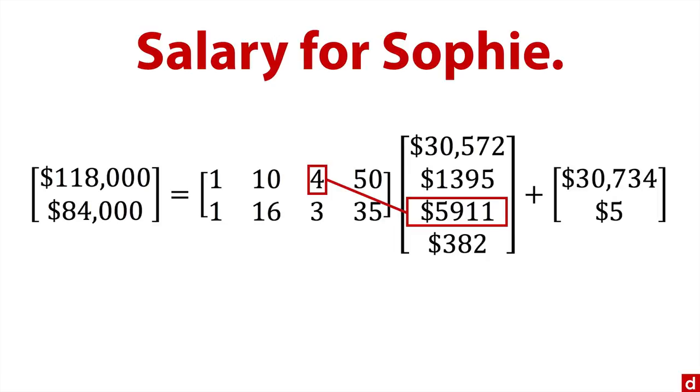By the way, these are real coefficients from a study, a survey of salary of data scientists. And then finally, hours per week. For each hour, you get $382.